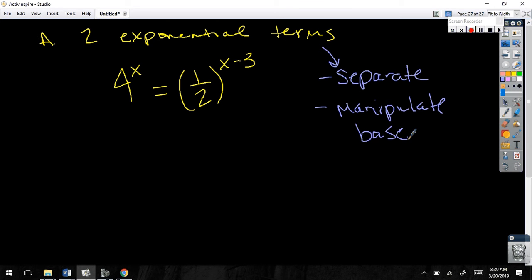Manipulate the base. Now here's the key. It has to keep the same value. If I change the base of 4, then at the end of the day, whatever I change it to, it's still got to have a value of 4. I can't make it not 4. So I could do like 2 squared or something like that, but it's still got to be 4. Or I could change one half to something.